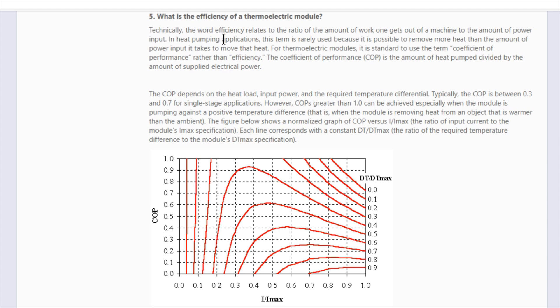In heat pumping applications this term is rarely used because it is possible to remove more heat than the amount of power input it takes to move that heat. For thermoelectric modules it is standard to use the term coefficient of performance rather than efficiency. The coefficient of performance or COP is the amount of heat divided by the amount of supplied electricity.